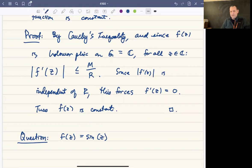Sine is certainly not constant. So just think about that. Why is this function F of z equals sine of z not a contradiction? Why does that not violate the theorem? Thank you.